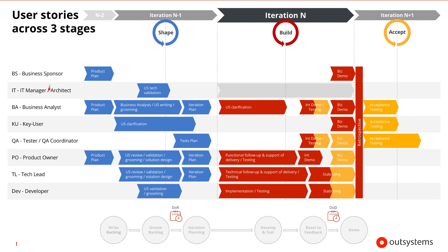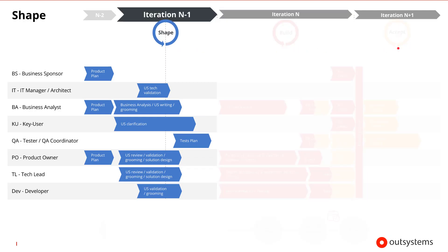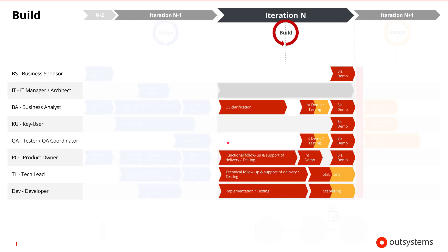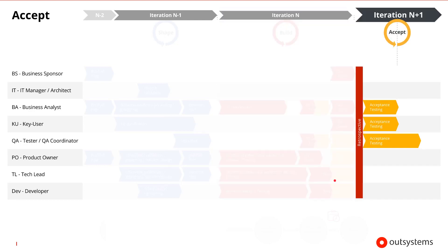Here we have a list of the roles that could be involved in each of these stages and the activities they would perform. The three stages are referred to as the shape stage, the build stage, and the accept stage. In the shape stage, user stories are prepared and plans are created for implementing and testing them. In the build stage, the user stories are implemented, tested, demoed to the business, and stabilized. And in the accept stage, acceptance testing is completed for each of the user stories.